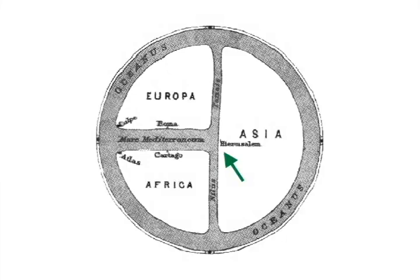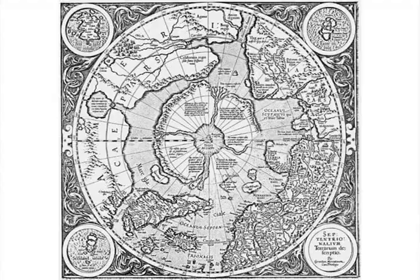Somehow or other, the tradition of Jambodvipa seems to have influenced Gerardus Mercator, who placed a mountain surrounded by a circular continent at the north pole of his map of the Arctic region.